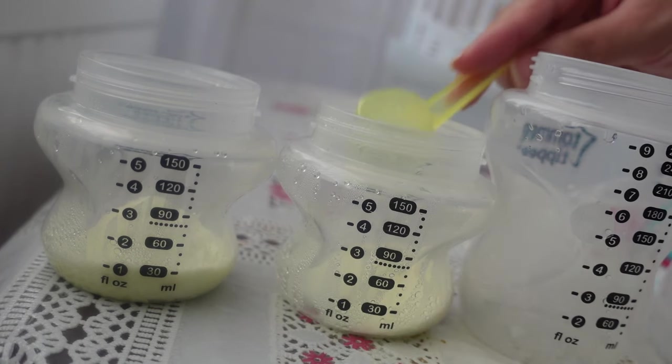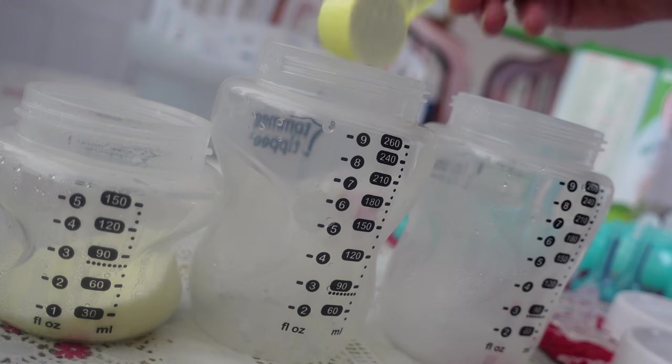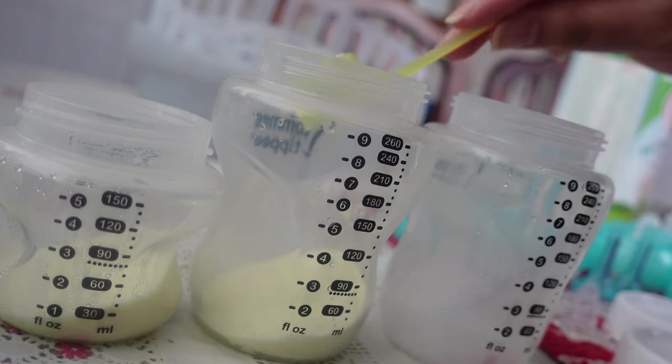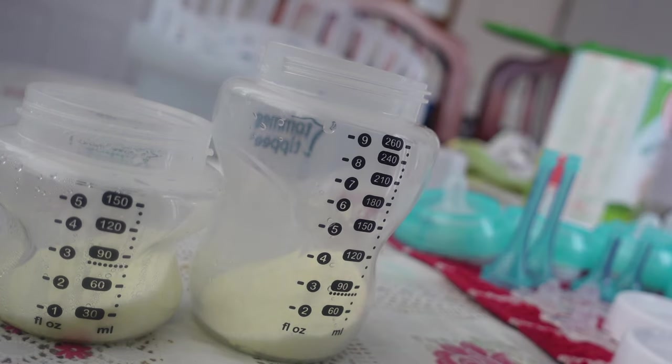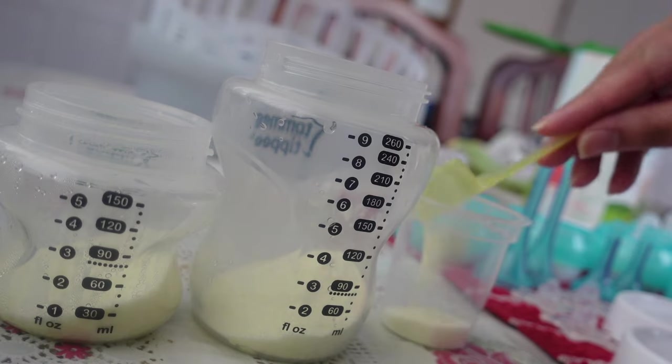What I like to do to make sure all my measurements are correct is to measure out the formula for three of my bottles. Then I'll put my fourth bottle to one side and fill up a powder pot dispenser with the right amount of formula for that fourth bottle.